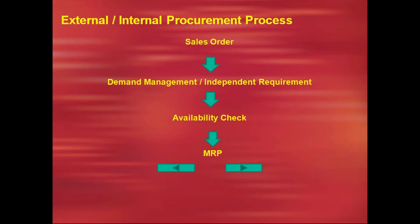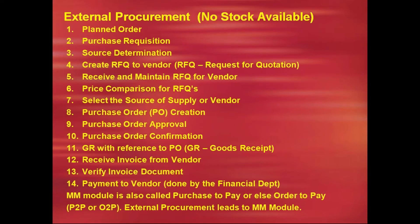The company accepts the customer requirement — we call this demand management or independent requirement. Now we need to check availability — that is the availability check — covering material, manpower, machinery, and equipment. Then comes MRP. In this context, MRP does not mean Maximum Retail Price — we call it Material Requirement Planning. It is a powerful planning tool that decides what type of planning to execute, because a company cannot blindly purchase raw material or produce a finished material unless it is needed.